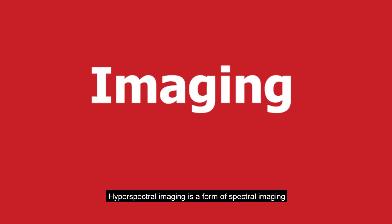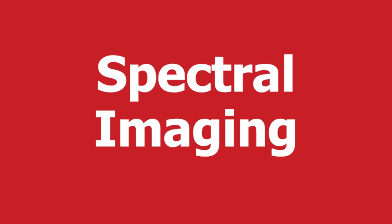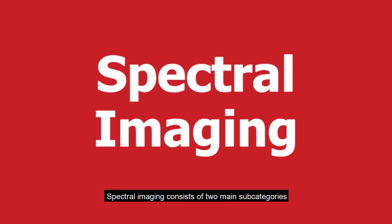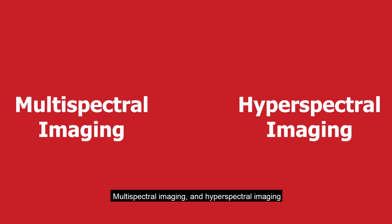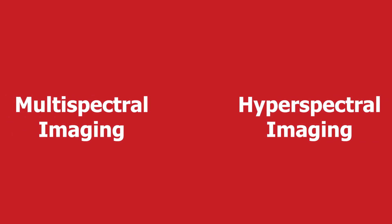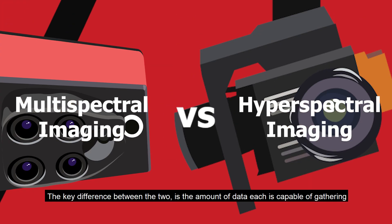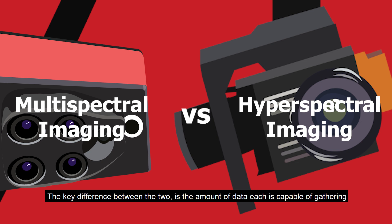Hyperspectral imaging is a form of spectral imaging. Spectral imaging consists of two main subcategories: multispectral imaging and hyperspectral imaging. The key difference between the two is the amount of data each is capable of gathering.